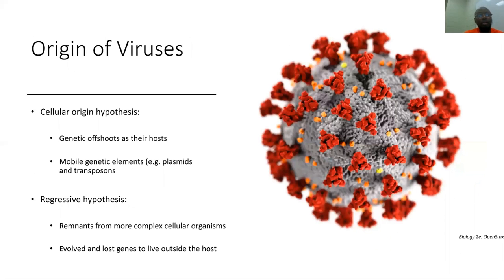Where do viruses come from? Two hypotheses exist. The cellular origin hypothesis argues viruses are genetic offshoots of their hosts — mobile genetic elements such as plasmids and transposons that broke off and miraculously found a way to stay independent. The regressive hypothesis argues viruses are simply remnants from more complex cellular organisms that found a way to stay alive.